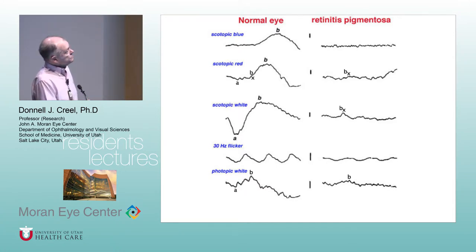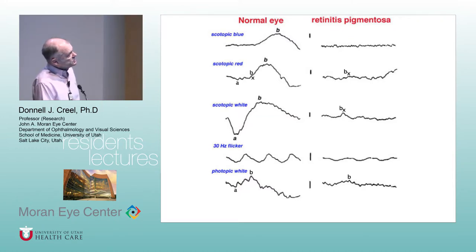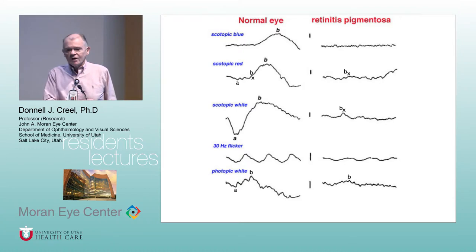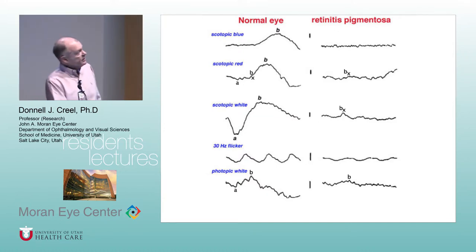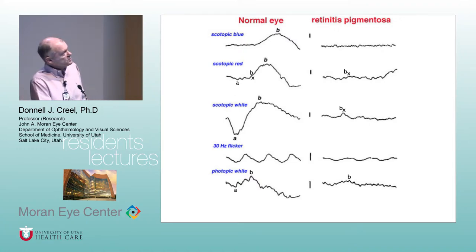These are the ERGs you get: scotopic blue, dim flash blue, dim flash red, bright white — all in the dark — and then light-adapted 30 hertz flicker and photopic white. In retinitis pigmentosa, the rod response is obliterated. You get a little BX response surviving because the dim red does tickle the cones slightly. You get a little remnant of a bright white flash and more functioning flicker and single flash because these are cones. This person was picked on purpose — if you catch them at just the right stage you might see some surviving cone physiology, but if you don't catch them until later, everything could be flat.